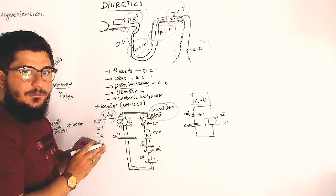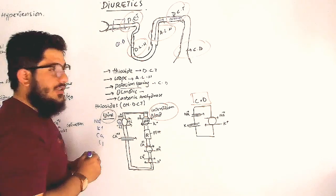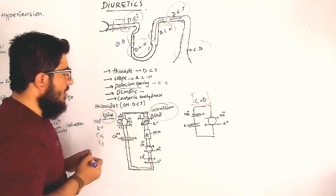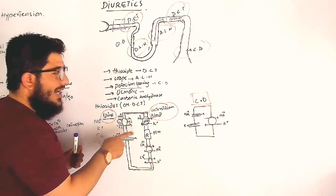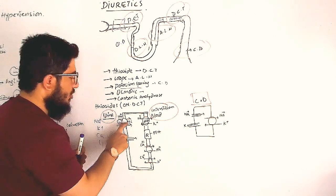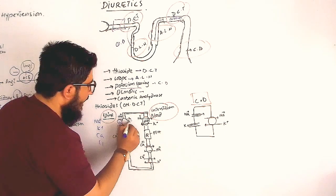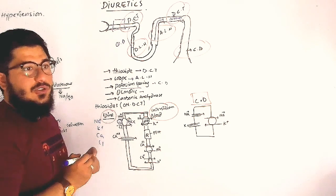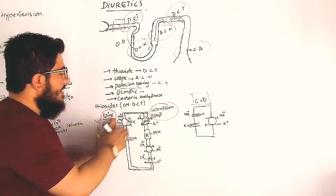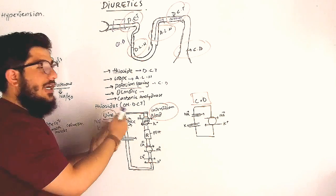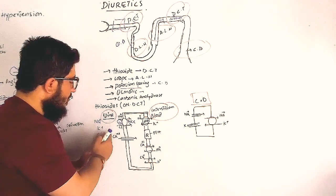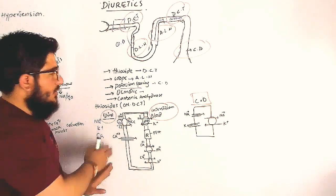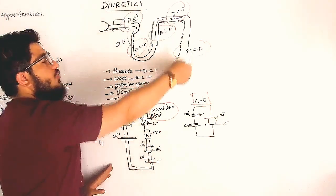Thiazide blocks the sodium-chloride co-transporter, NCC. This co-transporter normally allows sodium and chloride to go inside together. When thiazide blocks it, sodium will not be reabsorbed and chloride will not be reabsorbed. Sodium will move into the urine, and where sodium moves, water moves with it — so we remove sodium and increase urination.